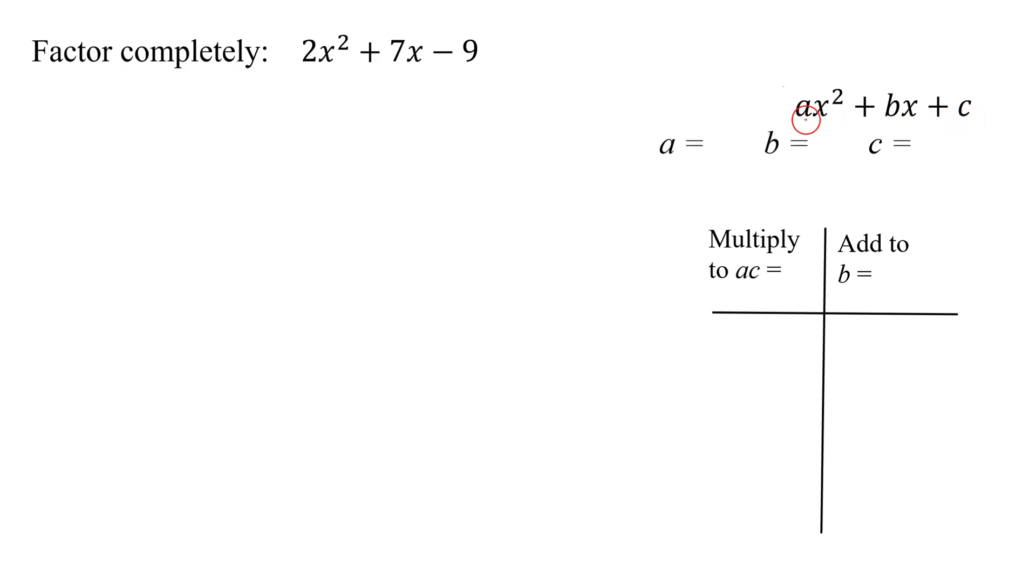So a is the coefficient of the x squared, and a is 2. b is the coefficient of the x, it's 7. c is the constant term, which is negative 9.